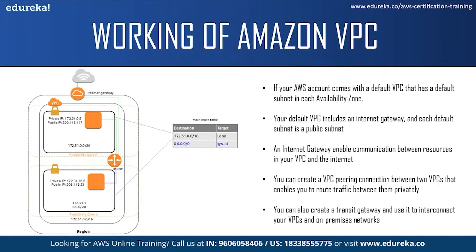These instances can only communicate with each other but cannot access the internet. However, you can enable internet access for these instances by attaching an internet gateway to the VPC and associating an elastic IP address with the instance. To connect your VPC to other VPCs or to your on-premises network, you can create a VPC peering connection between two VPCs that enables you to route traffic between them privately. Instances in either VPC can communicate with each other as if they were in the same network. You can also create a transit gateway and use it as an interconnection between your VPC and your on-premises network.